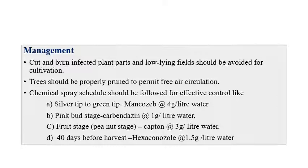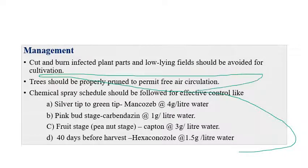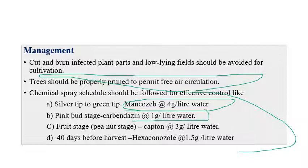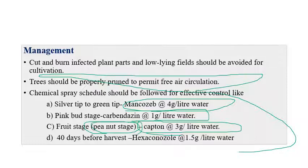For scab management, cut and burn infected plants, and pruning is important for air circulation. For chemical sprays: at silver tip stage, mancozeb at 4 g per liter is recommended; at pink bud stage, carbendazim at 1 g per liter; at fruit initiation stage when fruits are peanut-sized, captan at 3 g per liter of water; and 14 days before harvest, hexaconazole at 1.5 g per liter of water.